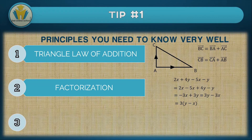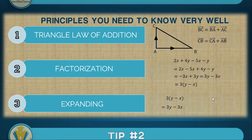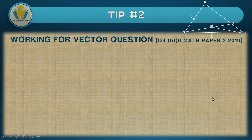Expanding is just the opposite of factorization. If you take the factorized answer and expand it, you should get back the earlier expression. Now let's look at the workings for the vector question we did earlier.